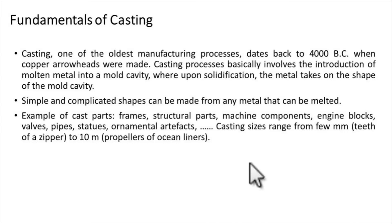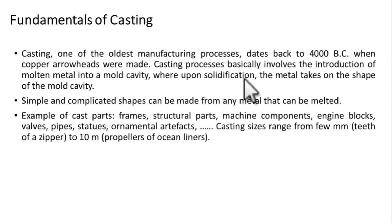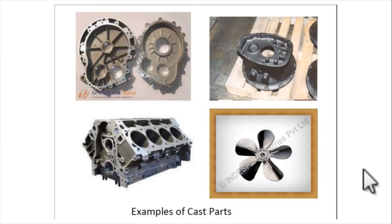Now the fundamentals of casting. Casting is one of the oldest manufacturing processes, dating back to around 4000 BC when copper arrowheads were made. The casting process basically involves the introduction of molten metal into a mold cavity, where upon solidification the metal takes the shape of the mold cavity. Many components we use in daily life — such as engine blocks, pipes, and statues — are manufactured using the casting process.